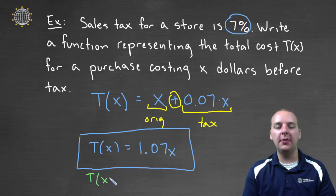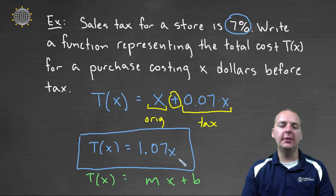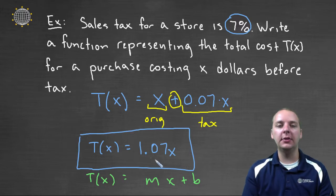Do you notice how T of X is really MX plus B. Now you say, well Devin, it doesn't have a B. Well you can think of the B as being zero, and the M would be 1.07. So it is a linear function. If you graph this linear function, it would be a straight line. It would be a straight line with a slope of 1.07.